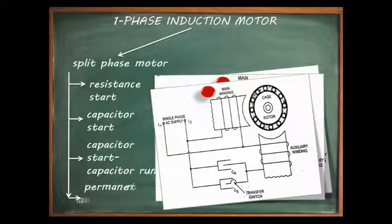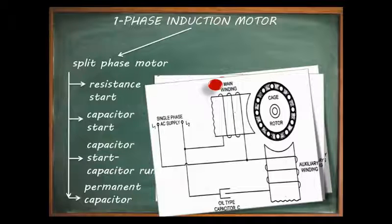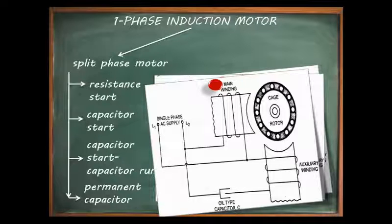The fourth type of split phase induction motor is the permanent capacitor single phase induction motor. In this type, the capacitor is permanently connected with the auxiliary winding and there is no centrifugal switch to separate it from the motor, so it is called the permanent capacitor single phase induction motor.